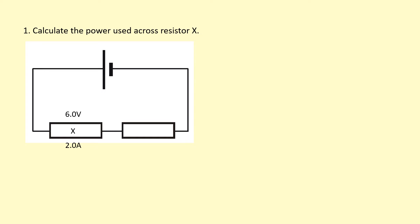Calculate the power used across resistor X. Power is the rate of transfer of energy — how much energy is used per unit time. In other words, I'm looking for how much joules of energy is used per second across this resistor. I've got the potential difference: 6 volts. That's just another way of saying that 6 joules of energy is transferred per coulomb of charge that goes across it.